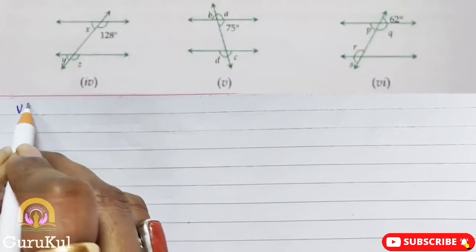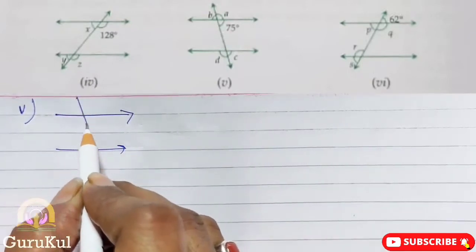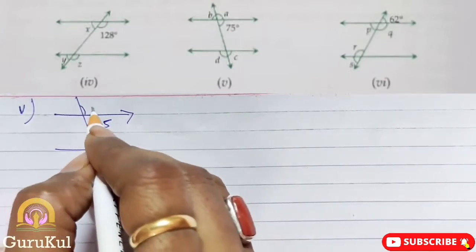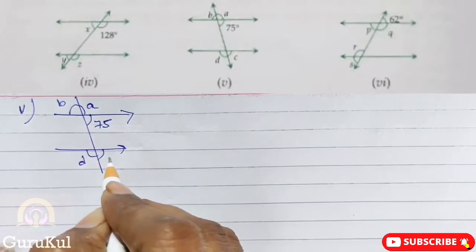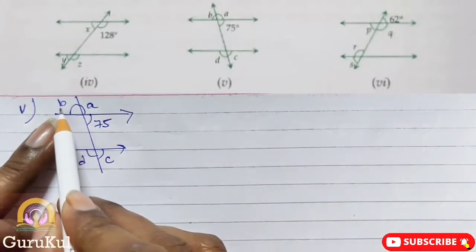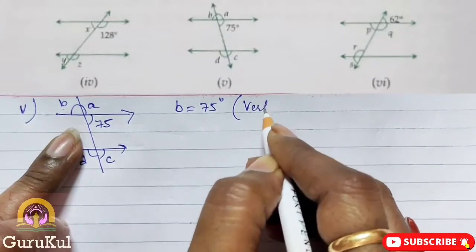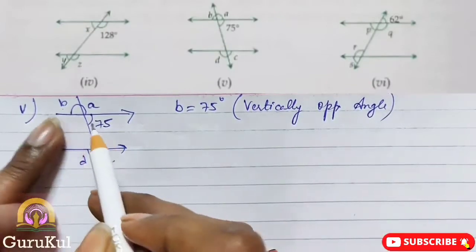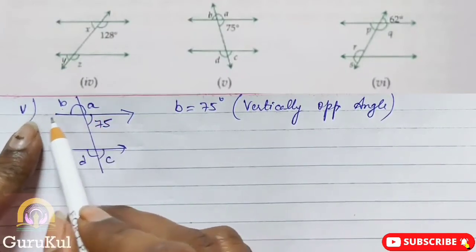Sub-part 5: the figure shows two parallel lines cut by a transversal with angles A, B, C, and D labeled. The given angle is 75 degrees. B is equal to 75 degrees — reason: vertically opposite angle. Since A and B form a straight line, A + B = 180 degrees. So 75 + A = 180, giving A = 180 − 75 = 105 degrees.